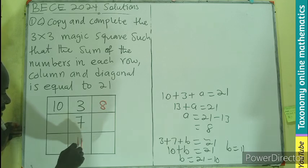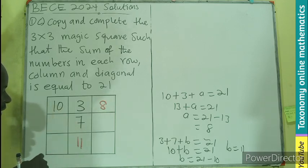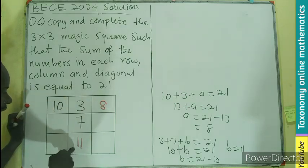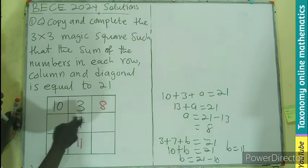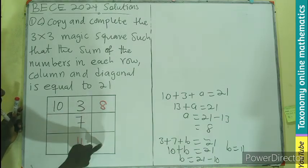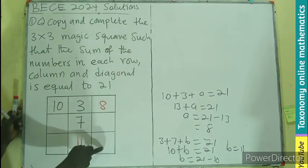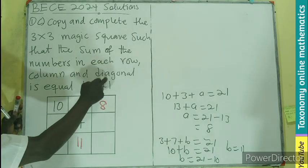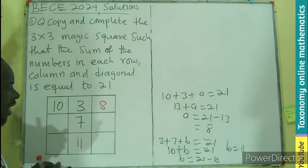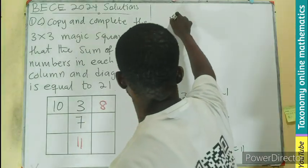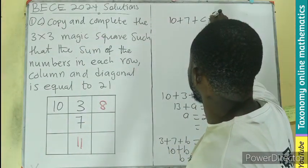Now we know here and here, do we have any? This is 1, 2 spaces, 1, 2 spaces, so we cannot go row or column but you can go diagonal. They said diagonal is also part, so 1, 2, 3. So I can label here c to have 10 plus 7 plus c giving us 21.